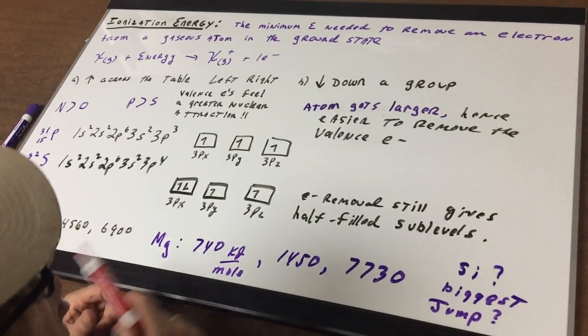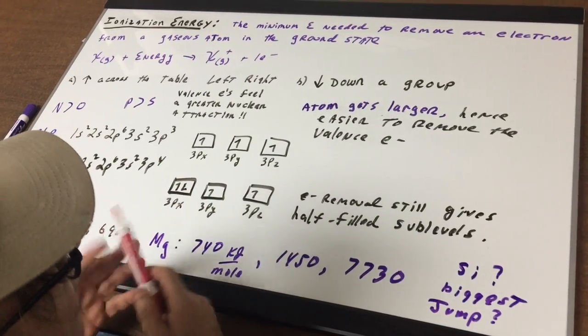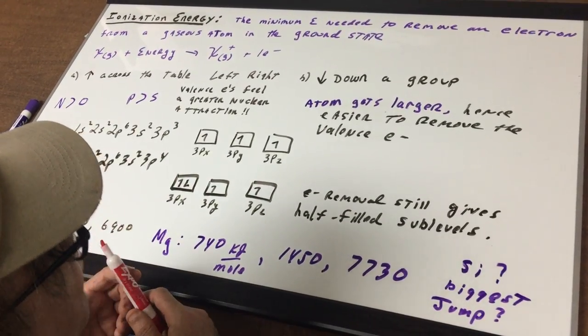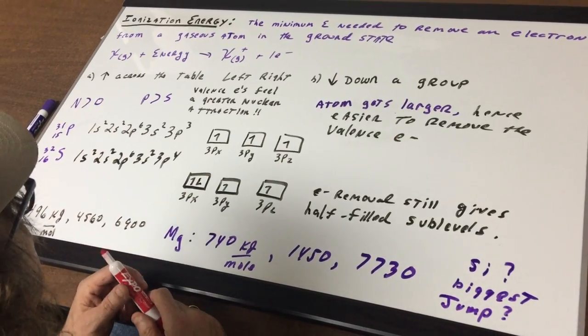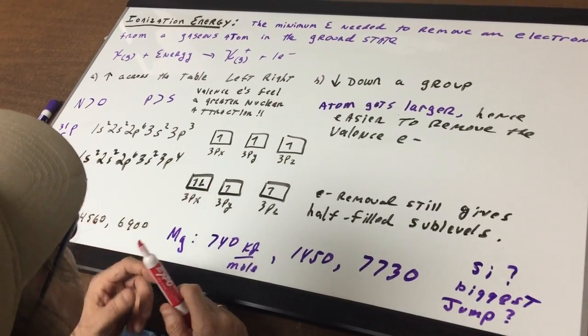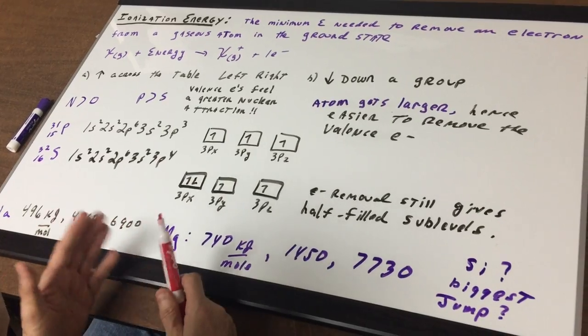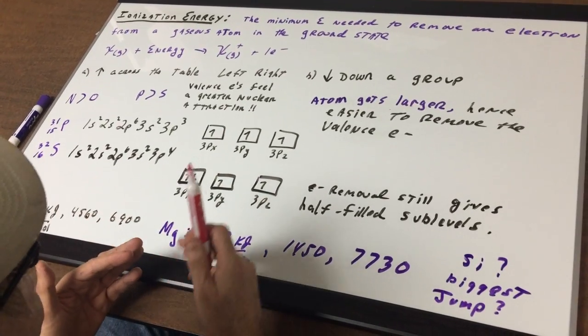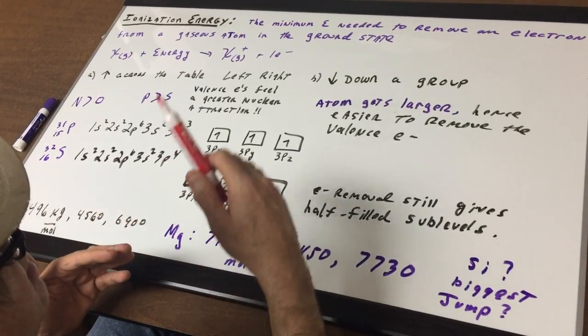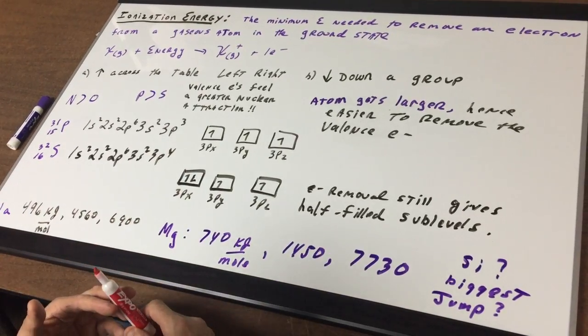As you're going down a group, the atom gets larger and therefore it's easier to remove the valence electron. So that sounds nice, across the table ionization energy is going up, ionization goes down as we're moving down a group.